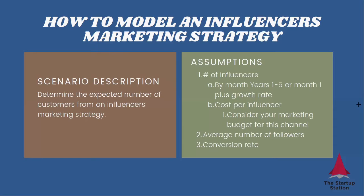We can input the number of influencers directly by month. If we have 60 months, we're building a five-year forecast, so we'd have to do it for every one of those 60 months. Alternatively, we can do it for just one month — the first one — and assume a certain growth rate. We also need to consider the cost per influencer, as we're paying those people to post about our products. And we need to consider our marketing budget for this channel so that we don't run out of money.